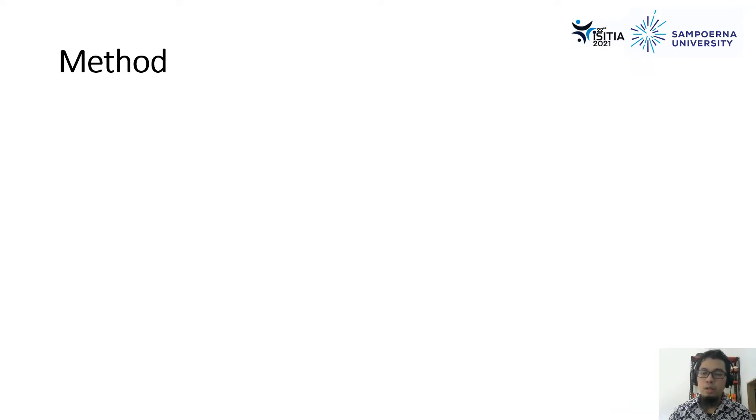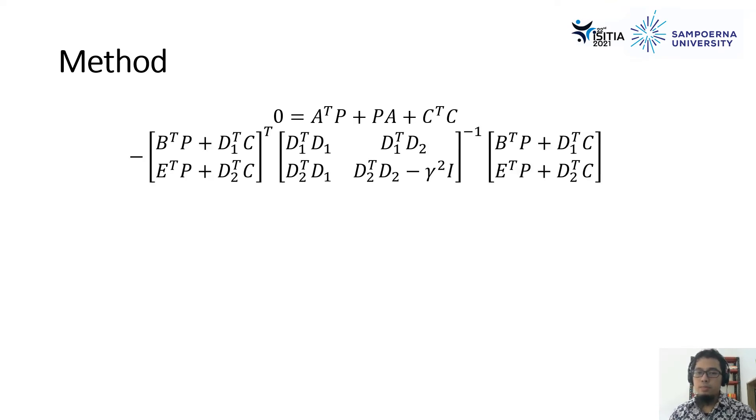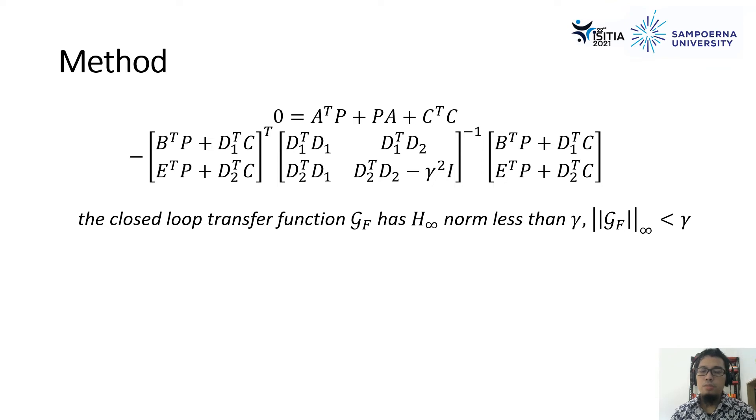In order to solve the algebraic Riccati equations, we need to introduce these equations. As we know, the closed-loop transfer function of GF has H-infinity norm less than gamma, as noted in the right side.